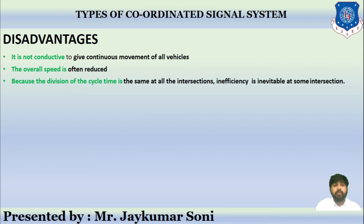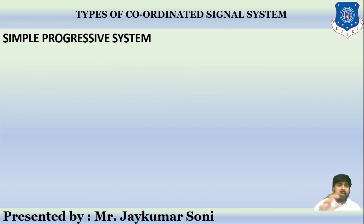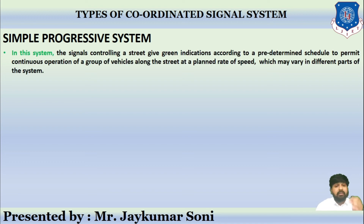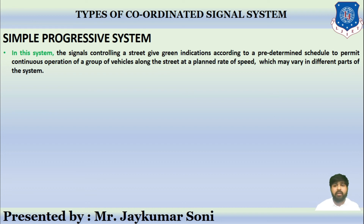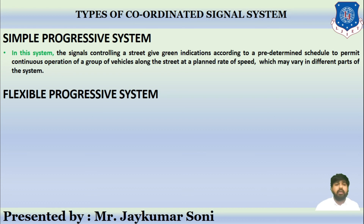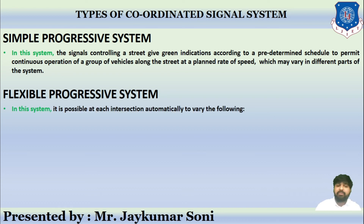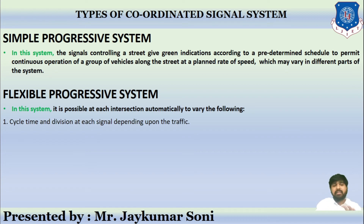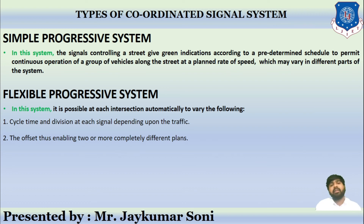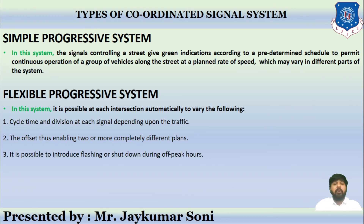In the simple progressive system, signals controlling a street give green indications according to a pre-determined schedule, permitting continuous operation of groups of vehicles along the street at a planned rate of speed, which may vary at different parts of the system. In the flexible progressive system, it is possible at each intersection to automatically vary the cycle time and its division, vary the offset, enable two or more completely different plans, and also introduce flashing or shutdown of signals during off-peak hours.